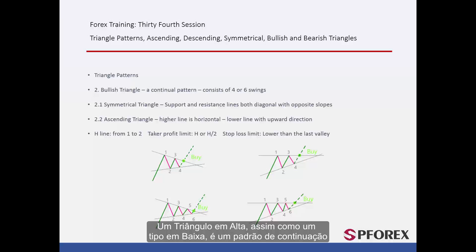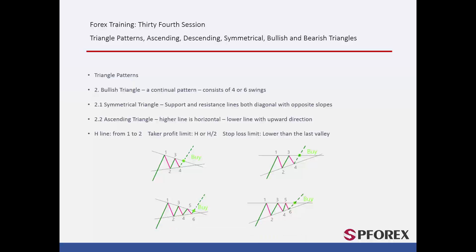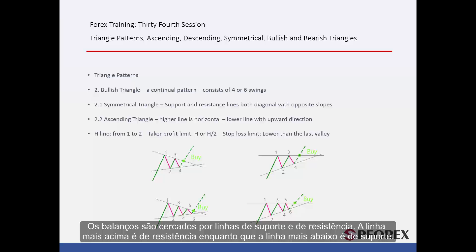A bullish triangle, like a bearish type, is a continuation pattern with 4–6 swings and 2–3 waves, formed on an uptrend. Swings are surrounded by the support and resistance lines. The upper line is a resistance, while the lower line is a support.